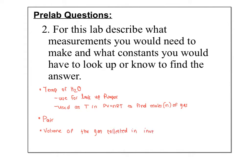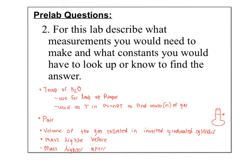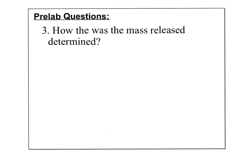In the video, a volumetric flask was used with a fill line, but we're going to use a graduated cylinder instead. We also need the mass of the lighter — the mass before releasing the gas and the mass after releasing the gas. Those are all the measurements needed.